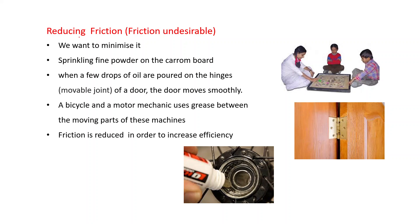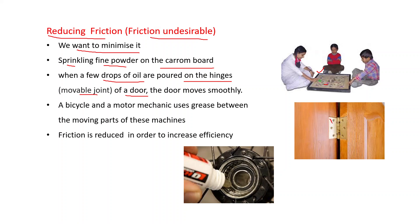In some situations we have to reduce friction because it is undesirable. Sprinkling fine powder on a carrom board reduces friction. When a few drops of oil are poured on the hinge — the movable joint of a door — the door moves smoothly. A bicycle or motor mechanic uses grease between the moving parts of machines to reduce friction and increase efficiency.